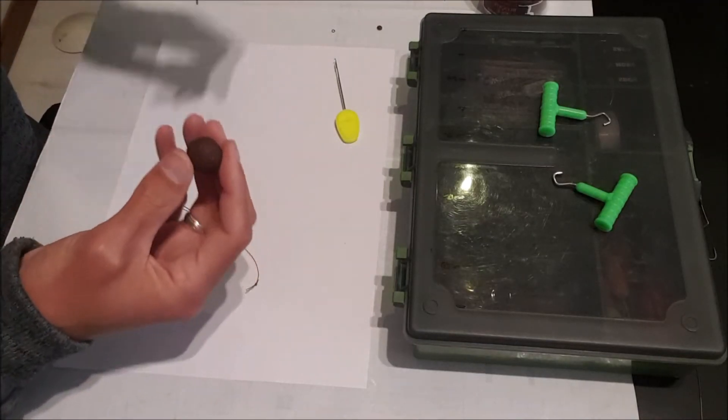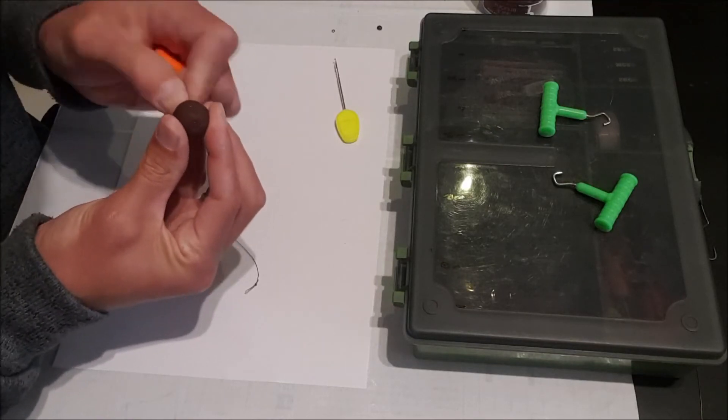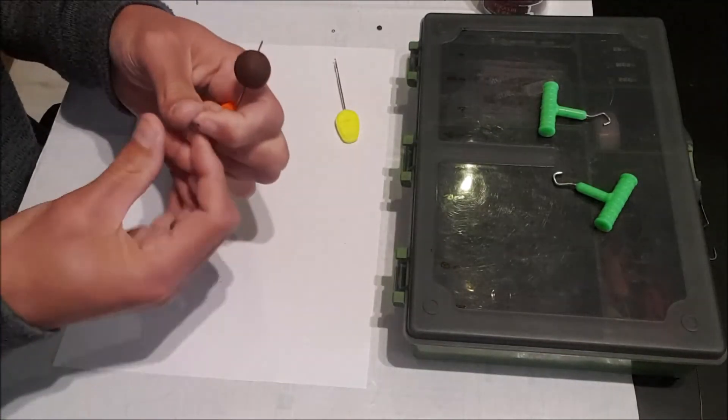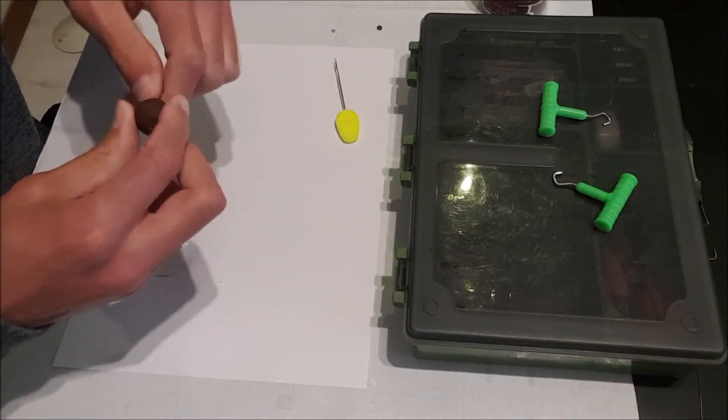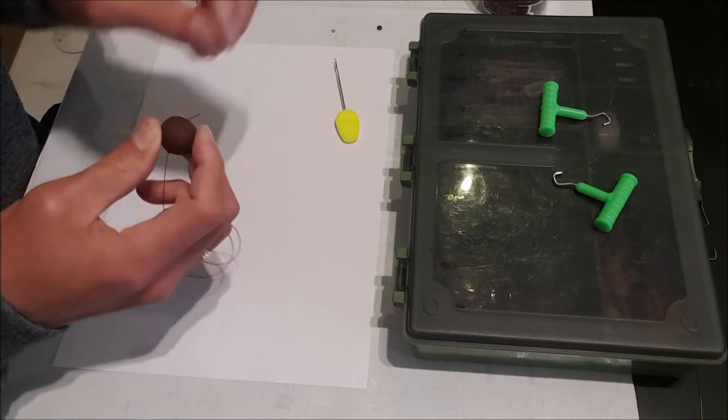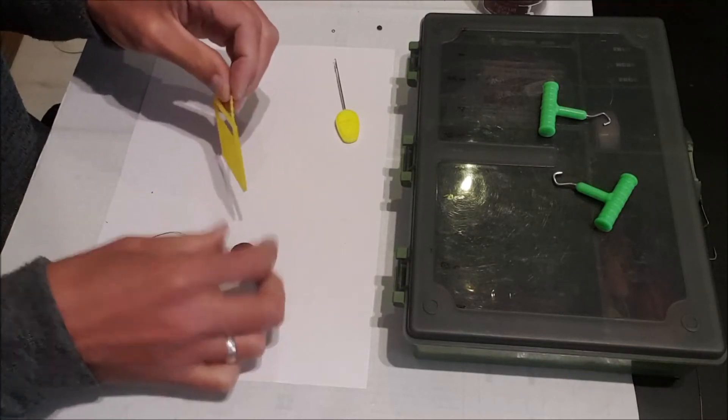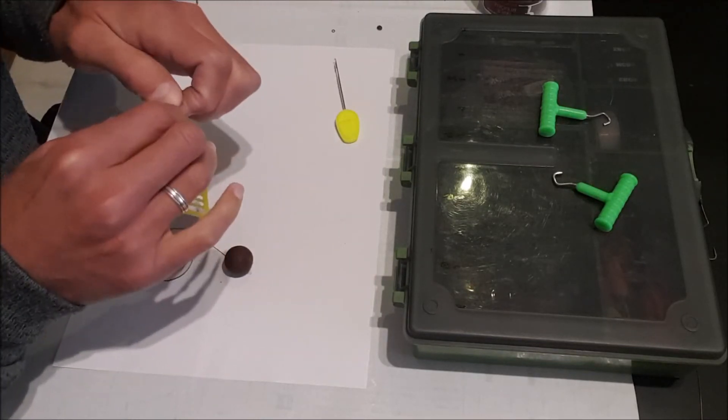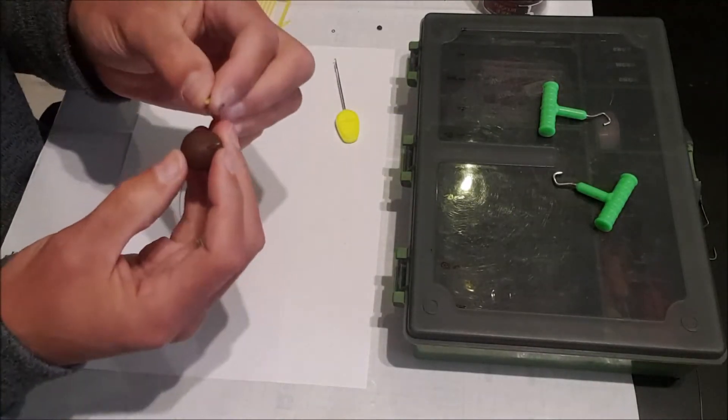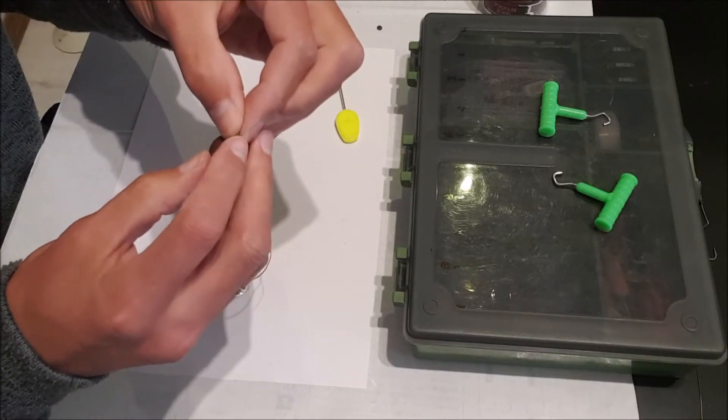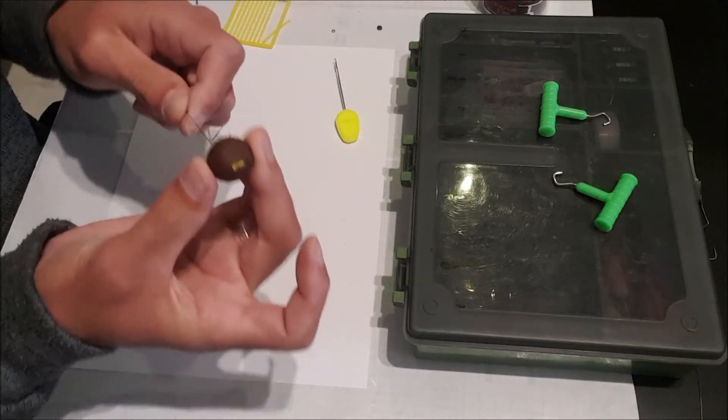Take a boilie, baiting needle. You've got a nice big loop, easy enough. Depending on what boilie stops you have, you can just break it off like that, pull down. There, it's secure.